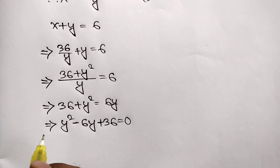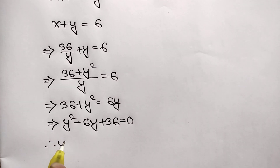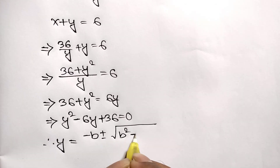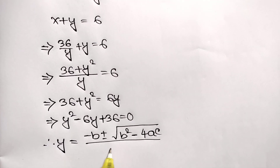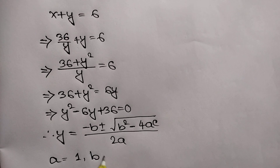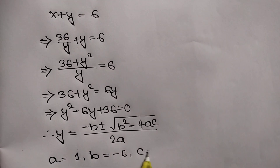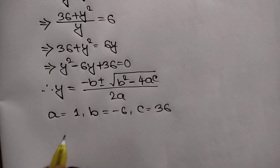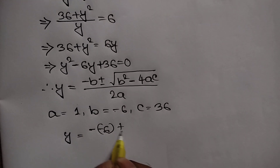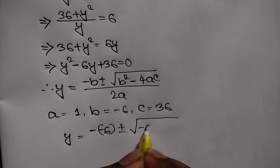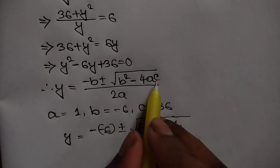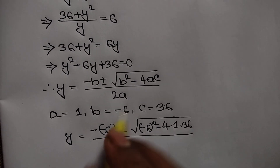Now we can apply the quadratic formula: y is equal to minus b plus or minus square root of b squared minus 4ac, all over 2a. Here a is equal to 1, b is equal to minus 6, and c is equal to 36. So y equals minus (−6) plus or minus square root of (−6) squared minus 4 times 1 times 36, over 2 times 1.